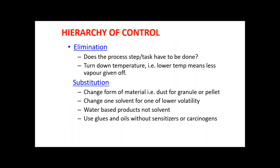Elimination asks: does the process step or task have to be done? For example, turning down the temperature means less vapour is given off. If we can reduce or control the temperature to room temperature, we can control the vapours of that chemical in the environment. For substitution, one aspect is changing the form of material — for example, dust for granular pellet, or changing one solvent for one of lower volatility.